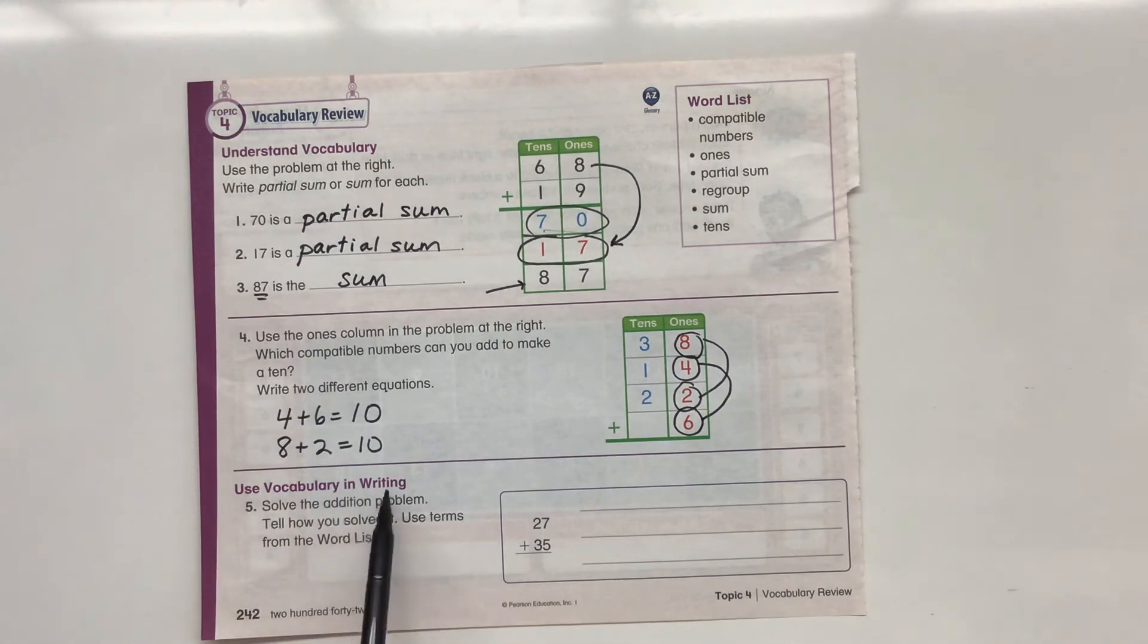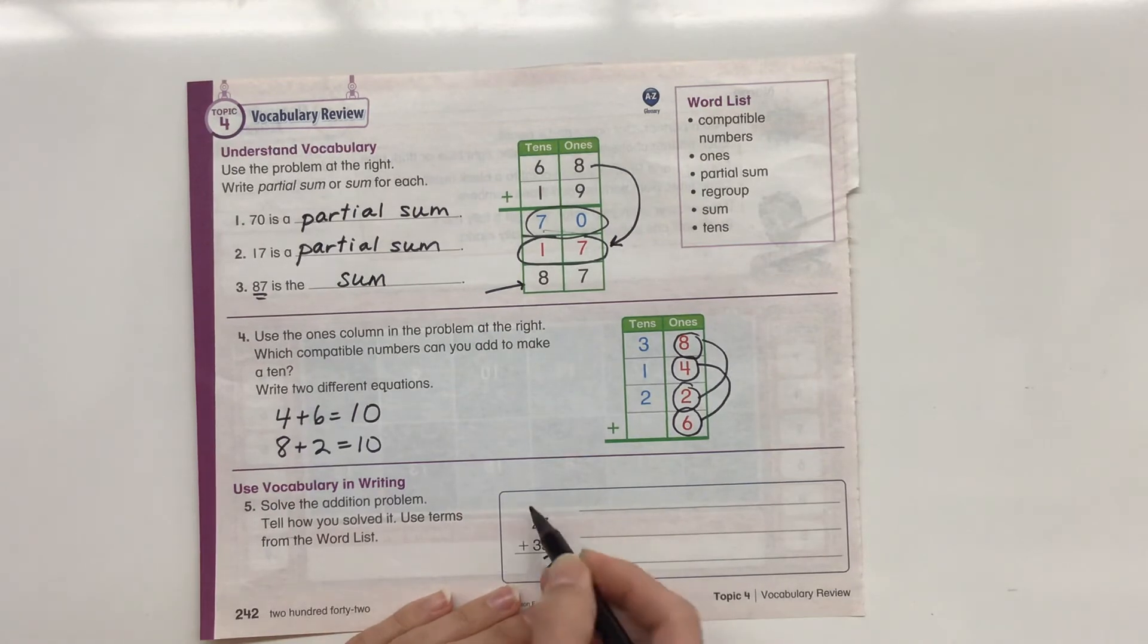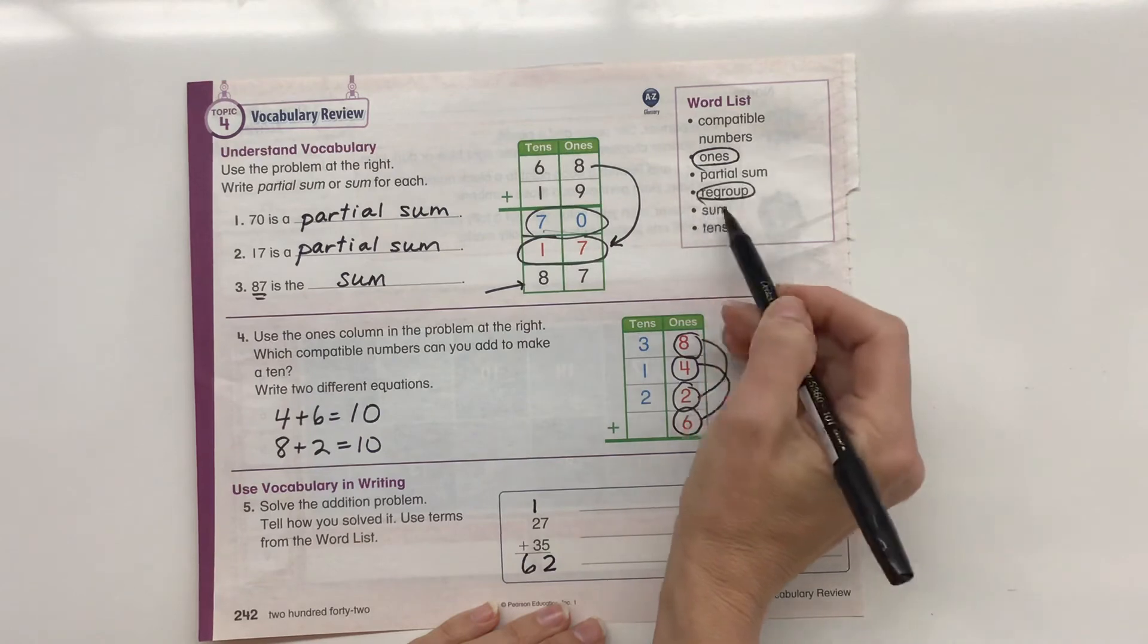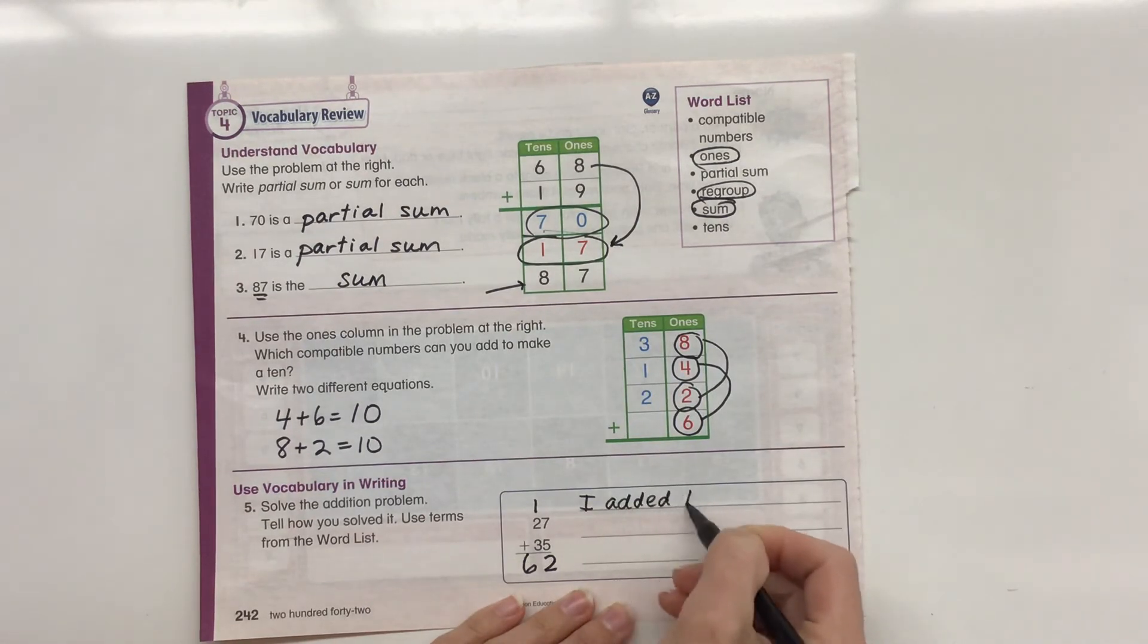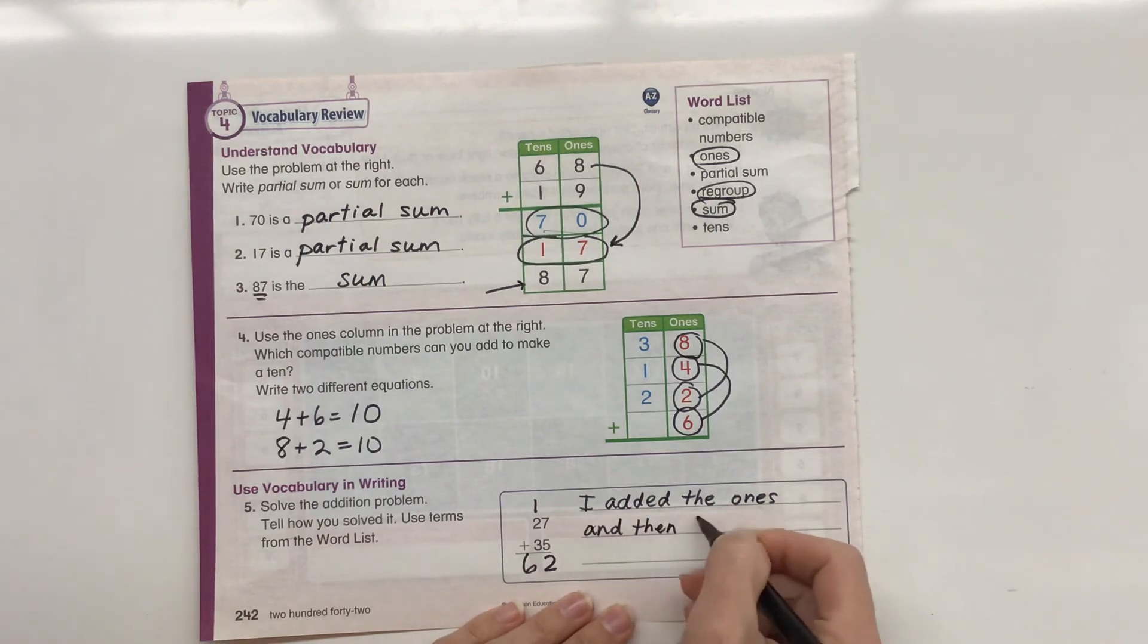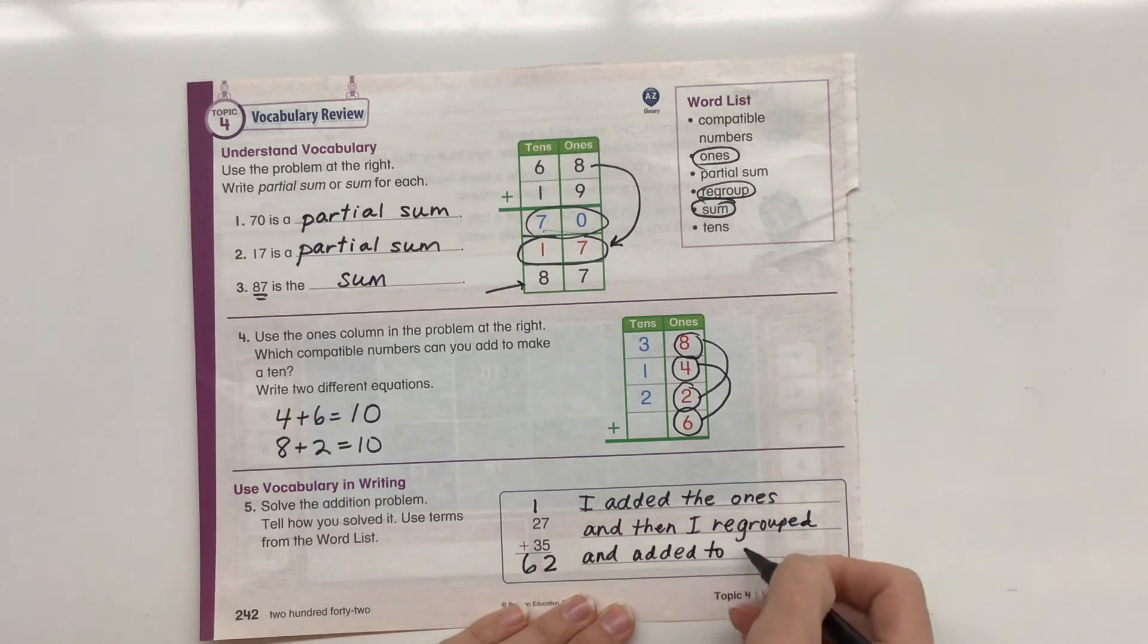Number five. Vocabulary in writing. Solve the addition problems. We need to solve it first. Tell how you solved it. Use terms from our word list. So let's see. Seven plus five is 12. A two in the ones place. I'm going to regroup one group of 10. One plus two is three. And three plus three is six. I get a sum of 62. So let's see. I'm going to use ones, regroup and sum. I'm going to say I added the ones. I added the ones. And then I regrouped. And then I regrouped. And added to find the sum. And added to find the sum.